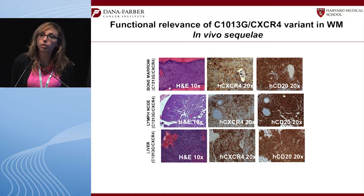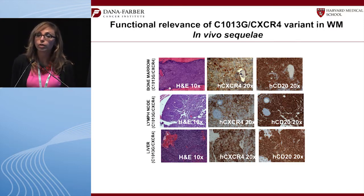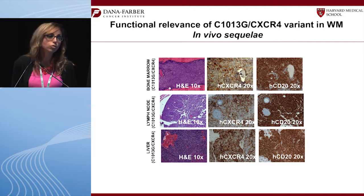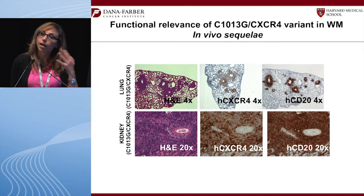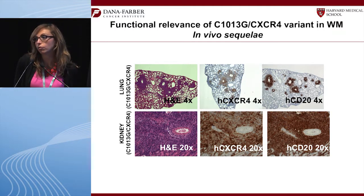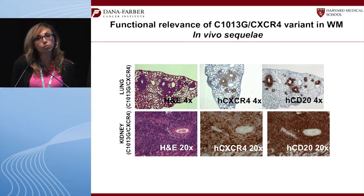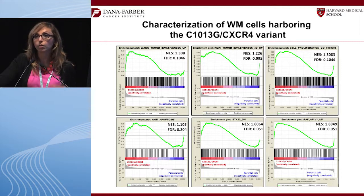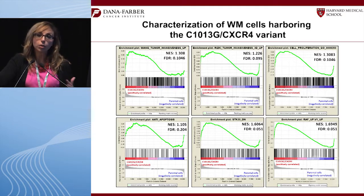When we put the CXCR4-mutated Waldenström cells back into the mice, we saw not only more aggressive disease but also extramedullary spread — to the spleen, liver, and bone marrow — with higher mortality. Importantly, the cells also spread to lung and kidney, which may explain some clinical cases of pulmonary involvement and renal insufficiency in Waldenström patients. By this definition, a Waldenström cell with higher CXCR4 is a much more aggressive cell.